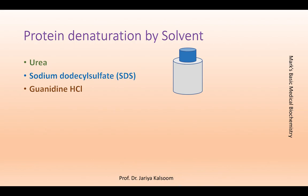Protein precipitates can sometimes be dissolved by amphipathic agents such as urea, guanidine hydrochloride, or sodium dodecyl sulfate, which form extensive hydrogen bonds and hydrophobic interactions within the protein.